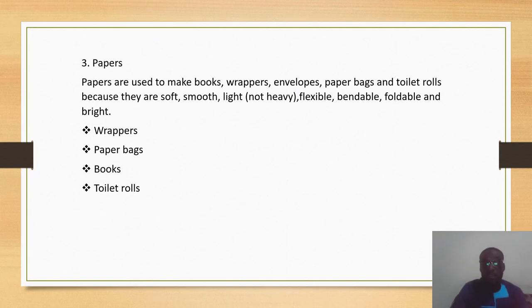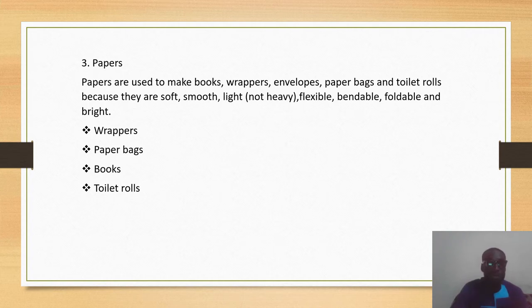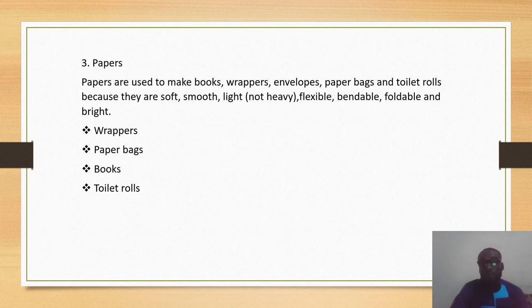Paper is used to make books, wrappers, envelopes, paper bags, and tissues, because paper is soft, smooth, light, and flexible. So we make things like wrappers, paper bags, books, and tissues out of paper.